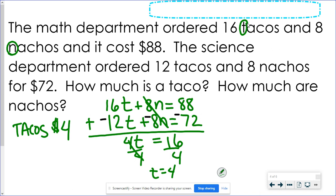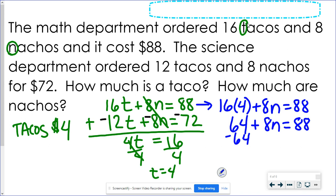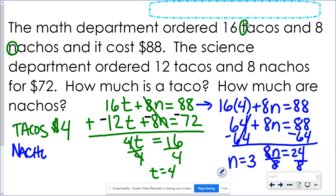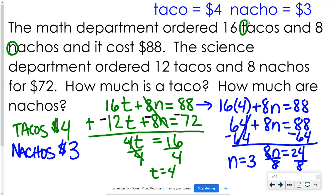I want to find out how much the nachos are. So I don't really care which equation I'm going to use. I'm going to use the top one because it hasn't been changed. So I'll have 16 times 4, 16 tacos $4 each, and 8 nachos cost $88. 16 times 4 is 64. So if I would get rid of the 64, I'll have 8N equals 24 and N equals 3 which means that the nachos are $3.